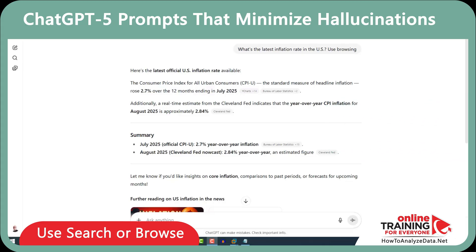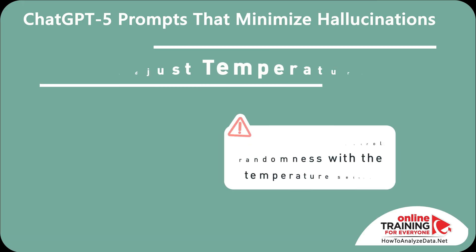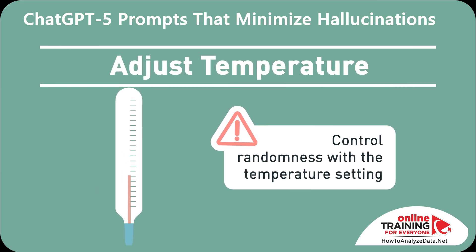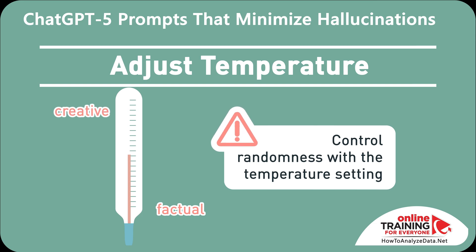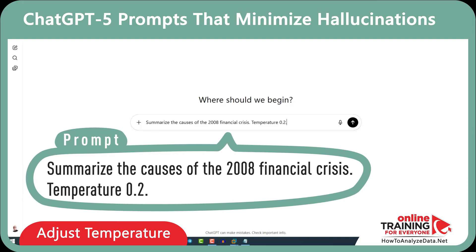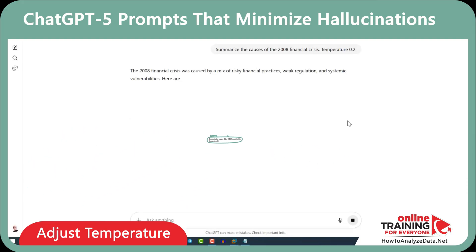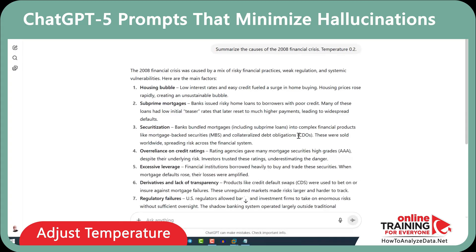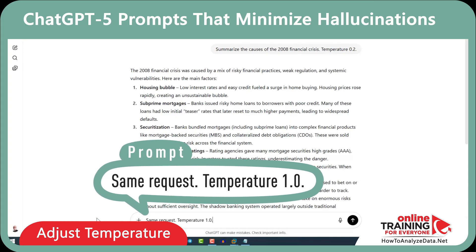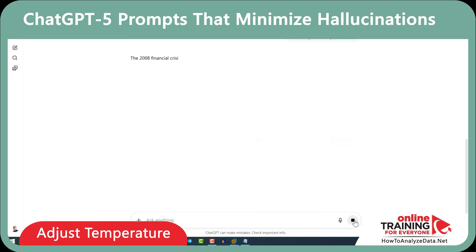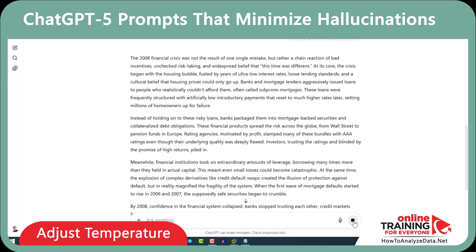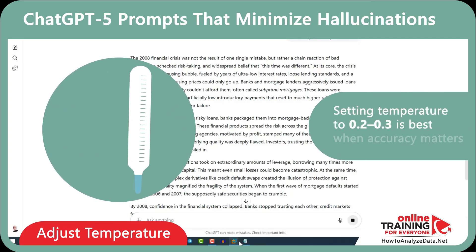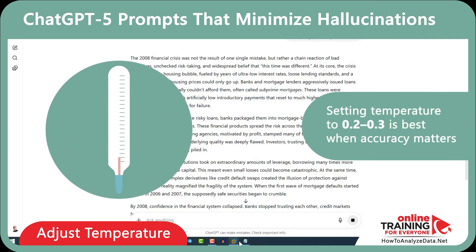As you might have guessed, I saved the best for last. You can control ChatGPT 5's randomness with the temperature setting. Lower means more factual; higher means more creative. Here is how to do it: "Summarize the causes of the 2008 financial crisis. Temperature 0.2." You can see that the output is a concise, factual bullet list. Now let's try the same request with temperature 1 — the output is much longer, more narrative, and less strict. Always remember that setting temperature to 0.2 to 0.3 is best when accuracy matters.